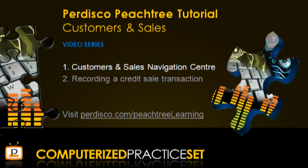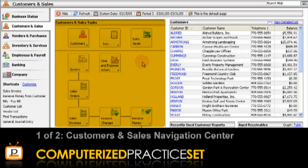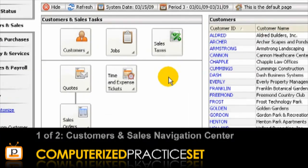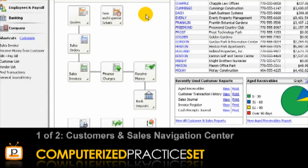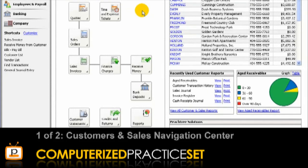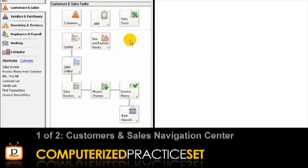Let's begin by exploring the tasks section of the Customers and Sales Navigation Centre. The icons are divided into two different sections. Positioned at the top are the maintenance task icons, used to set up and maintain the master files of the business that relate to customers and sales. Below this are the information processing task icons, displayed like a flowchart depicting the order of steps in the sales cycle and used to record and process the transactions of the business.